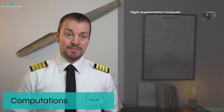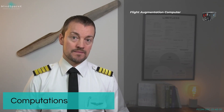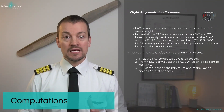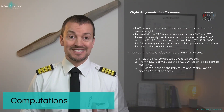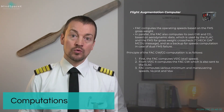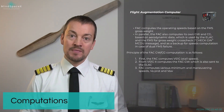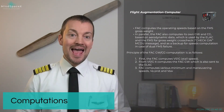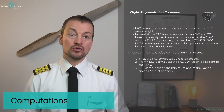Because the flight augmentation computer is the backbone of how all speed calculations on this aircraft are performed, let's go into a little more detail about what the FAC calculates. The FAC computes its operational speeds based on the FMS gross weight, which comes from values set during pre-flight preparation such as zero fuel weight. In parallel, the FAC also computes its own gross weight and its own CG based on aerodynamic data, which is then sent to and used by the ELAC and the FMS for gross weight cross-check. This is how you get the gross weight check message on the MCDU display if there is a discrepancy. The speeds and values calculated by the FAC also serve as a backup in case of dual FMS failure.